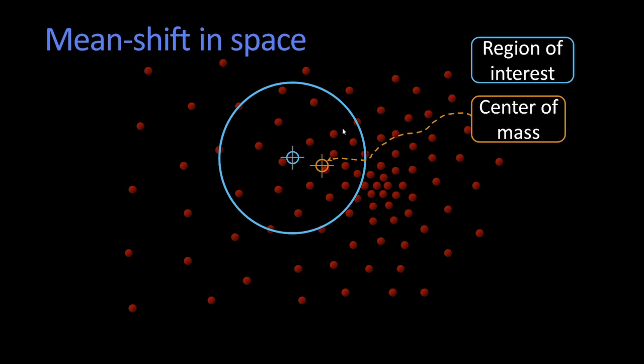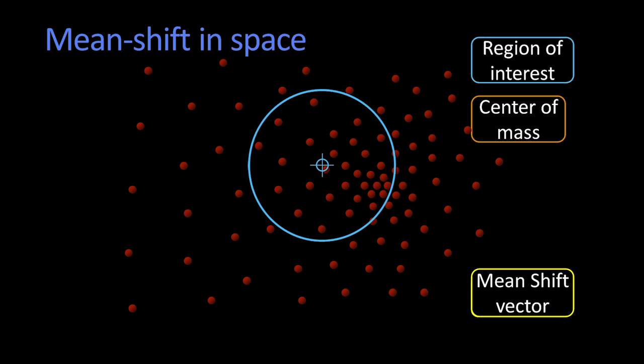And we say, oh, it's not right in the middle. And that difference between them, that's called the mean shift vector. So this is called the mean shift algorithm. Amazing, huh? And so what do you do with the mean shift vector? Well, you shift the mean. And there it goes. Perfect.